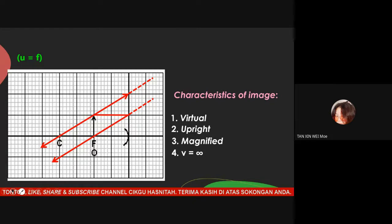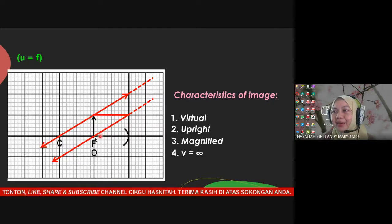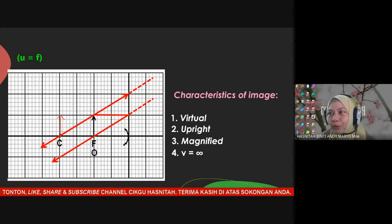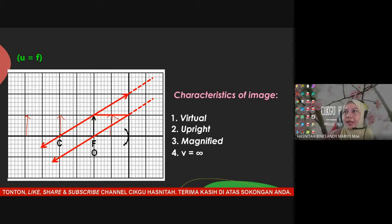How do you determine which rules to apply? It depends on the position of the object. When the object is at C, Rule 3 is not applicable. When the object is exactly at F, Rule 2 is not applicable. When the object is between F and 2F or at other positions, you can apply all three rules — just select any two. If U equals F or U is less than F, apply Rules 1 and 3.